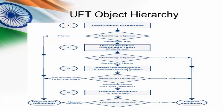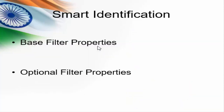Smart identification will be executed only if it is defined and enabled. Same like description property, smart identification uses two types of properties: the first one is base filter properties and the second one is optional filter properties.